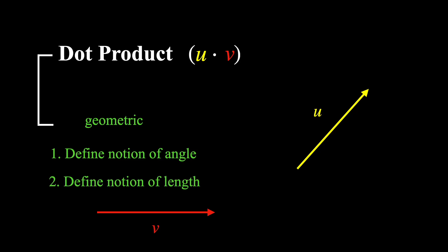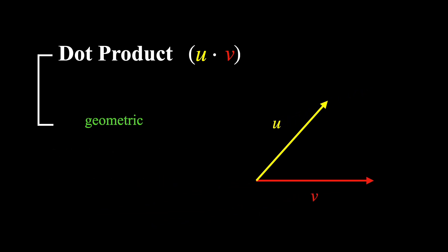and that it provides a natural definition for the notion of the length of a vector. Okay, so what is this definition? In order to take the dot product between u and v, first, bring them together so that the origin of each vector is the same.